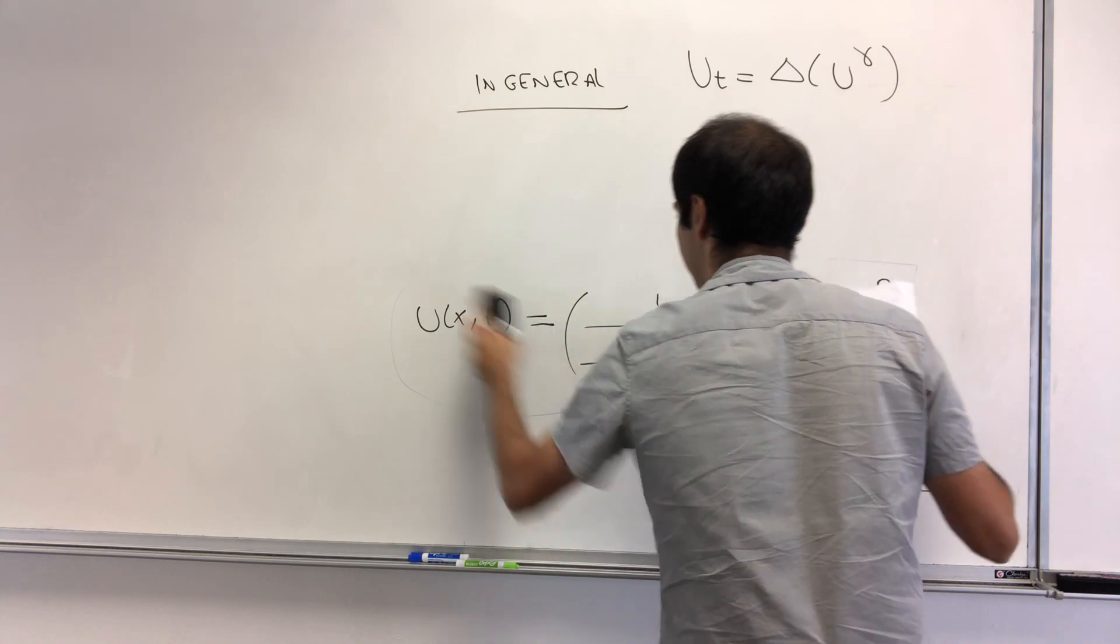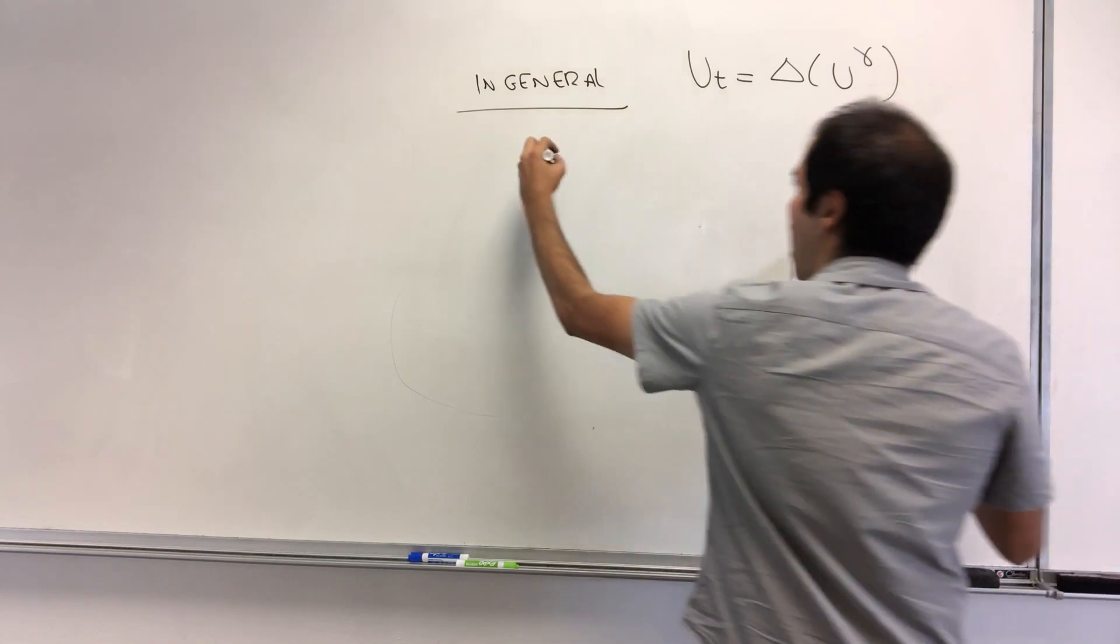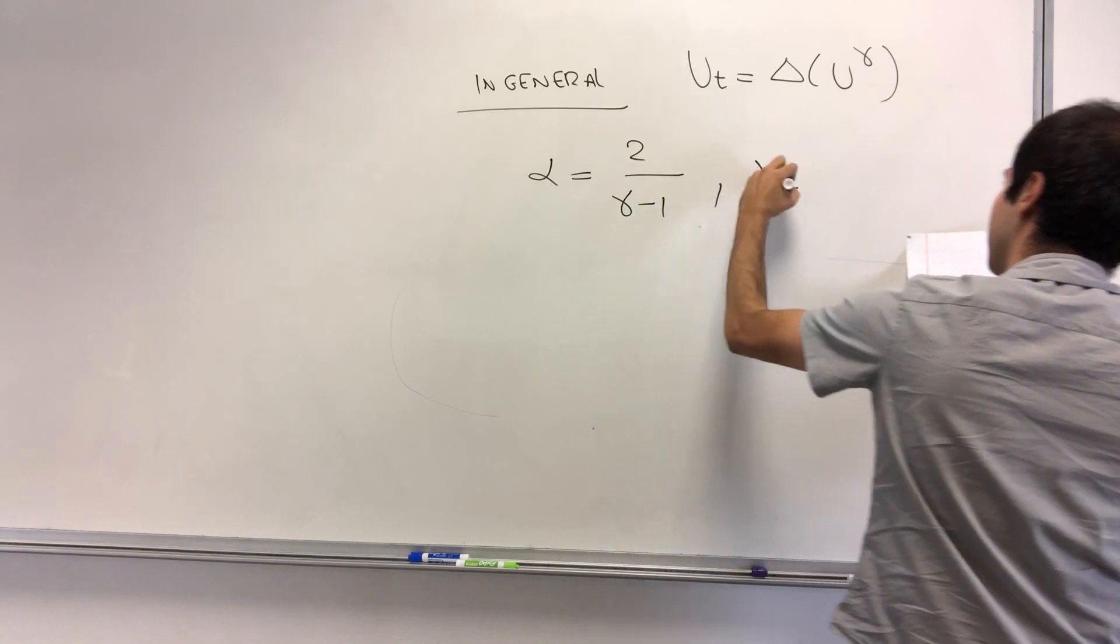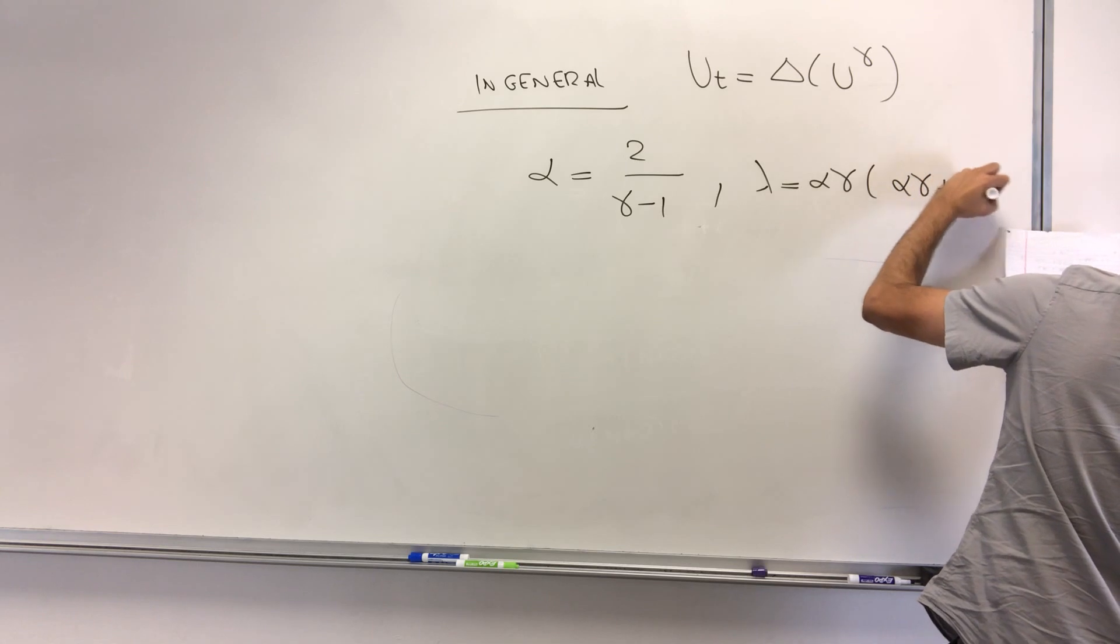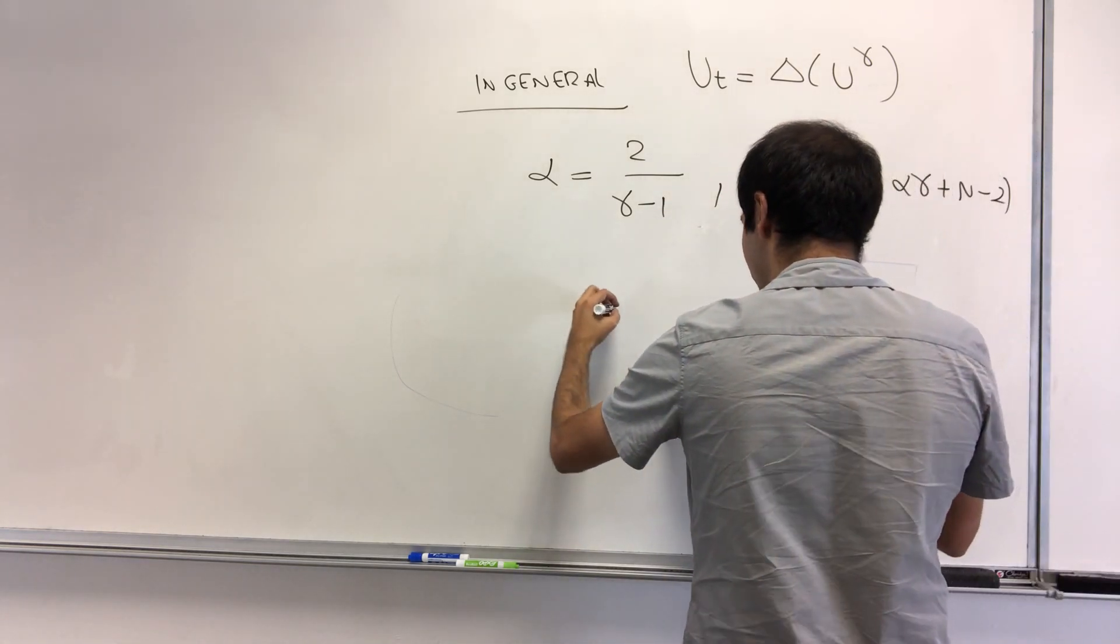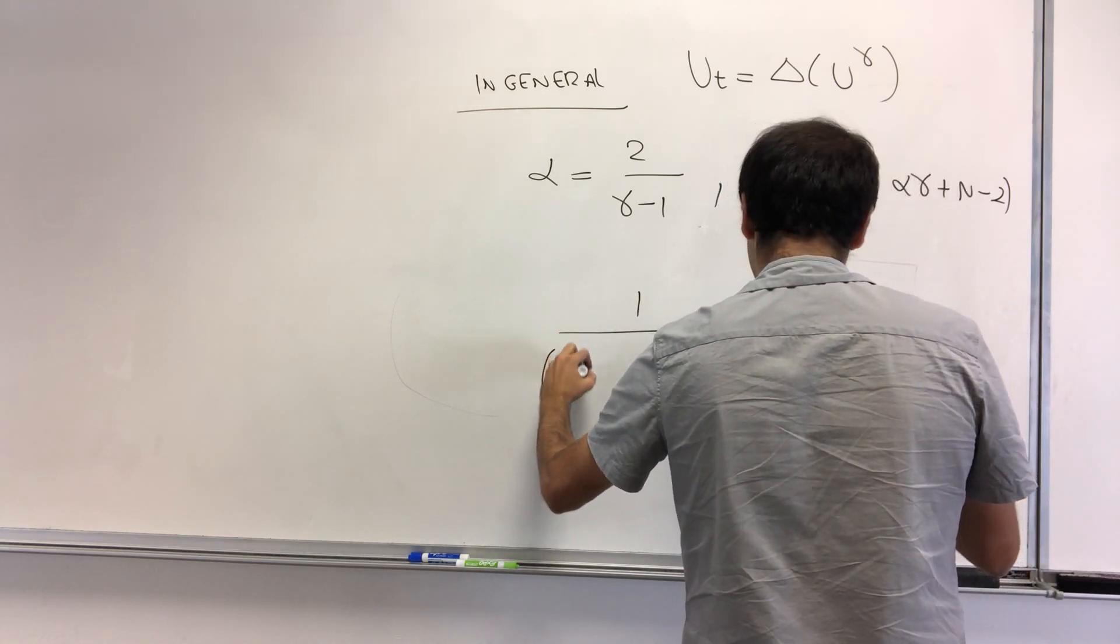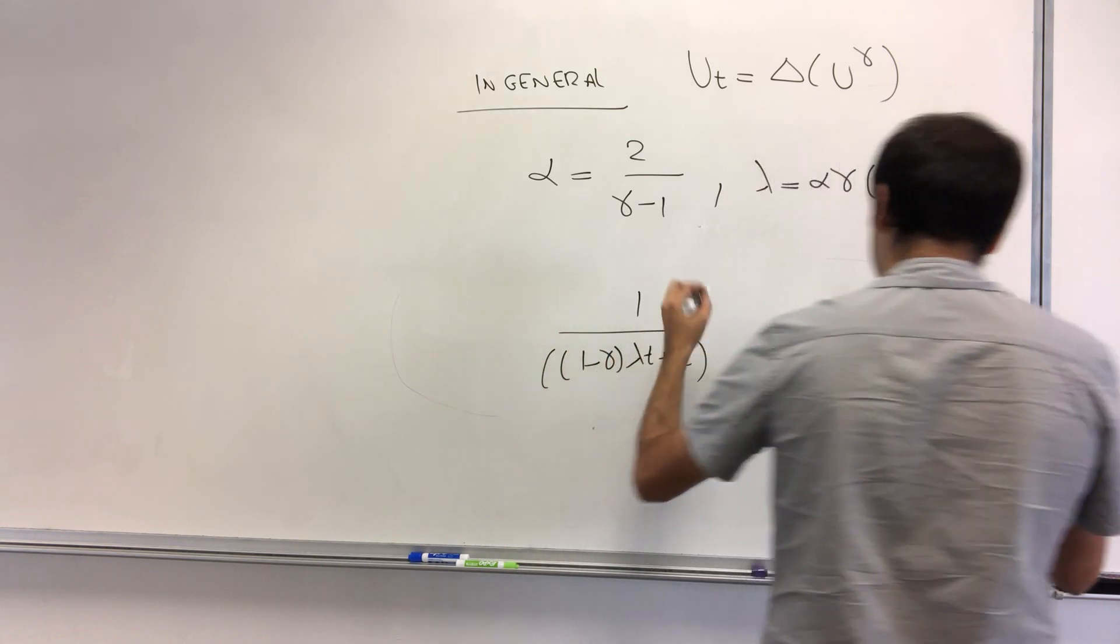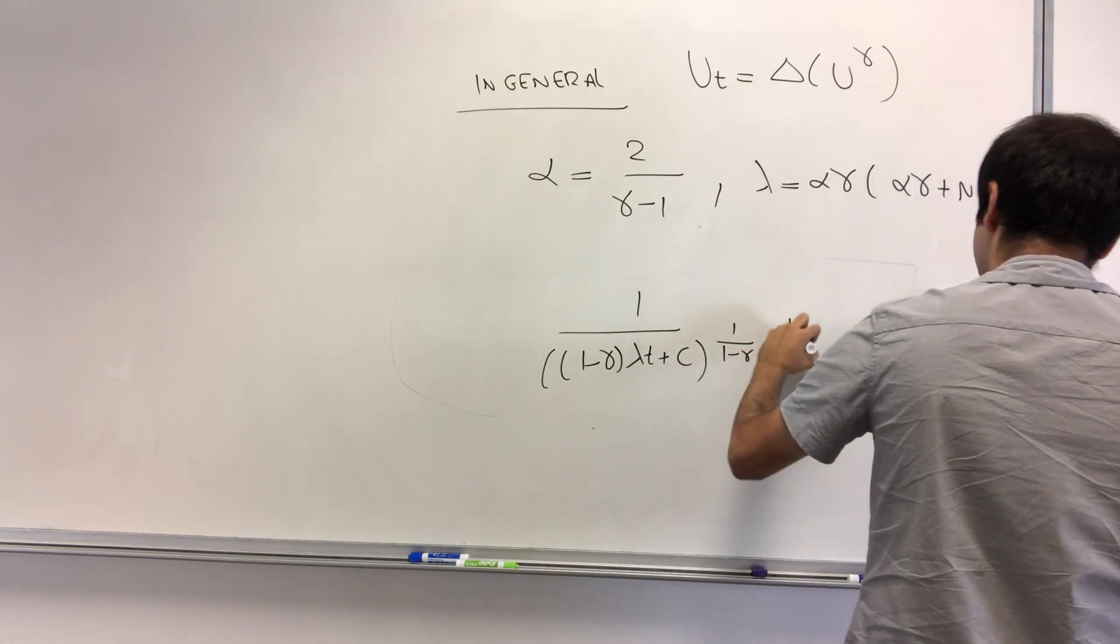In that case, alpha would be 2 over gamma minus 1, and lambda would be alpha gamma times alpha gamma plus n minus 2, which is still positive. And the solution is the same thing. So it would give you 1 over 1 minus gamma lambda t plus c, and then to the 1 over 1 minus gamma times x to the alpha.